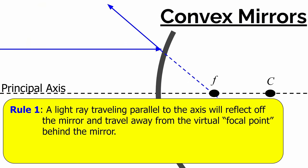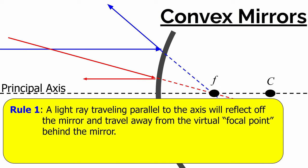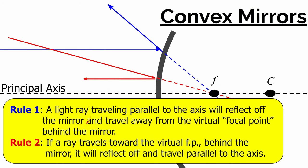Using that idea, here are the two rules for convex mirrors. Rule one: a light ray traveling parallel to the principal axis will reflect off the mirror and travel as if it came from the virtual focal point behind the mirror. Rule two is the reverse: any valid ray path is reversible, so if light travels toward the virtual focal point, when it bounces off the mirror it must travel back parallel to the principal axis.